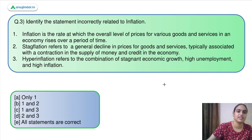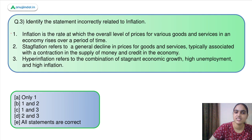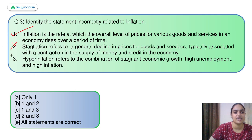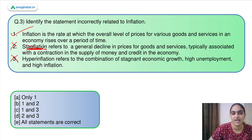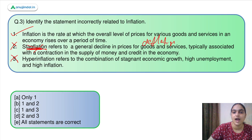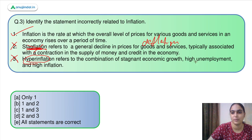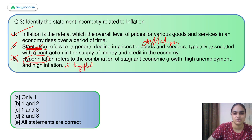Moving back to question three: identify the incorrect statements about inflation. The first statement — inflation is the rise in the price level — is correct. The second and third are incorrect. The second uses the term for a general decline in prices of goods and services — it should have been deflation, not stagflation. The third says hyperinflation refers to the combination of stagnant economic growth, high unemployment, and high inflation — it should have been stagflation. So the answer is option B.